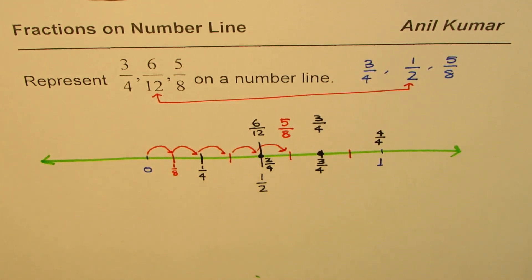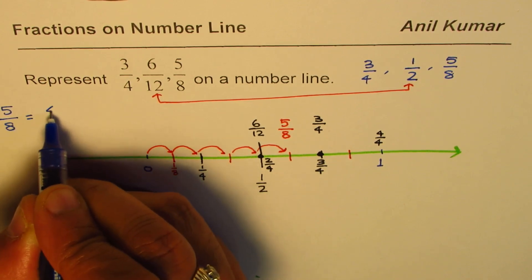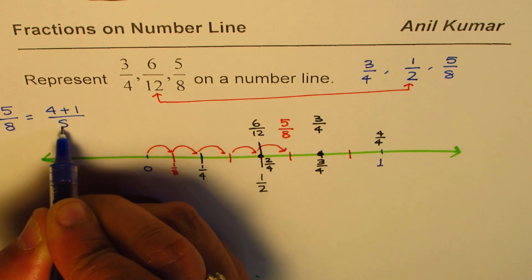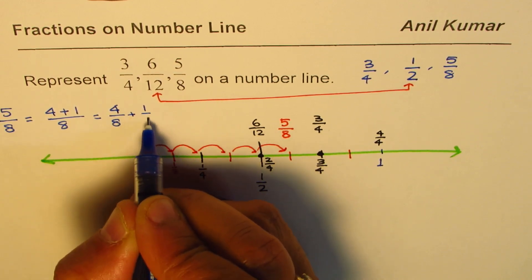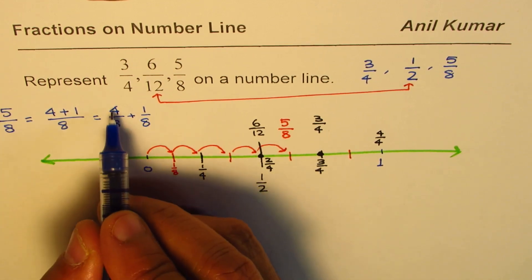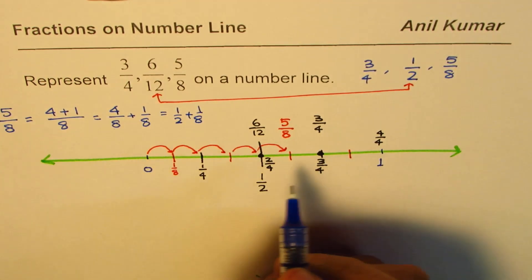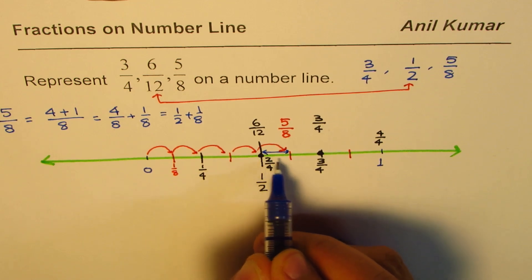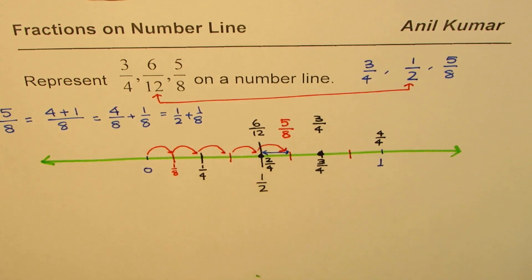Slightly more than half — correct. You can check: 5/8 equals 4/8 plus 1/8, and 4/8 is half. So 5/8 is half plus 1/8 — one eighth more than half. You can see that it sits exactly one eighth beyond the midpoint. We could have measured straight from half as well.